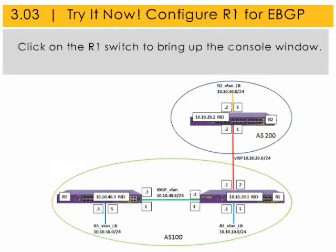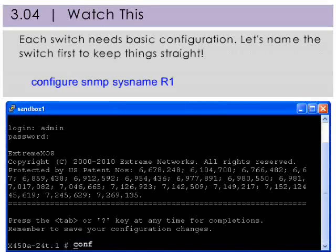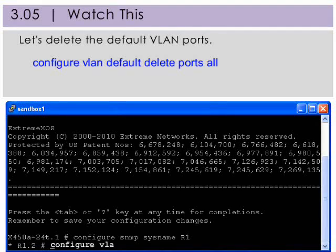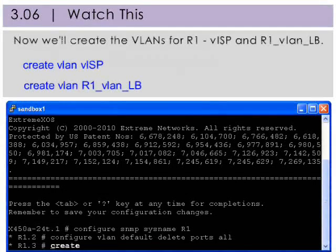Let's get started by configuring switch R1 for eBGP operation. Click on R1 to bring up the console window. Each switch needs basic configuration. Let's name the switch first to keep things straight. Let's delete the default VLAN ports. Now we'll create the VLANs for router 1. First, VISP.